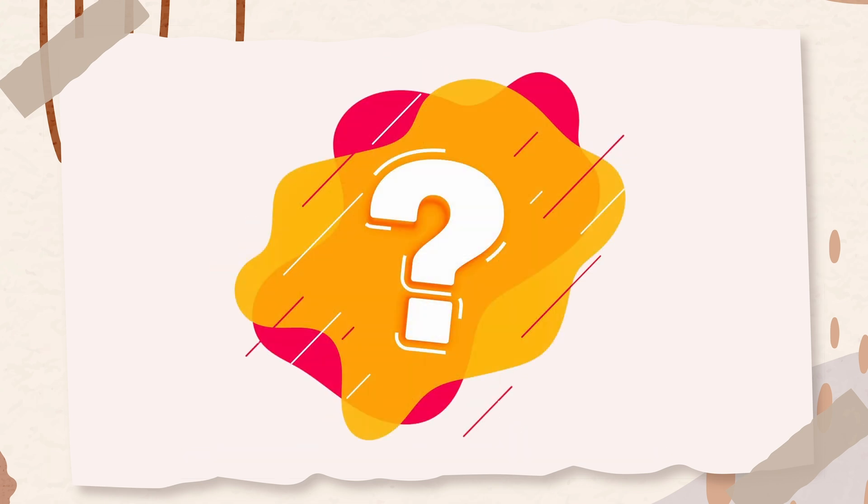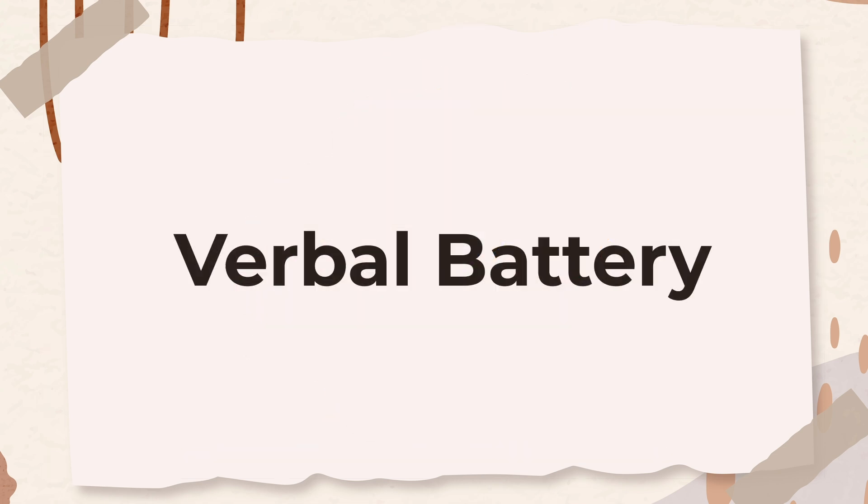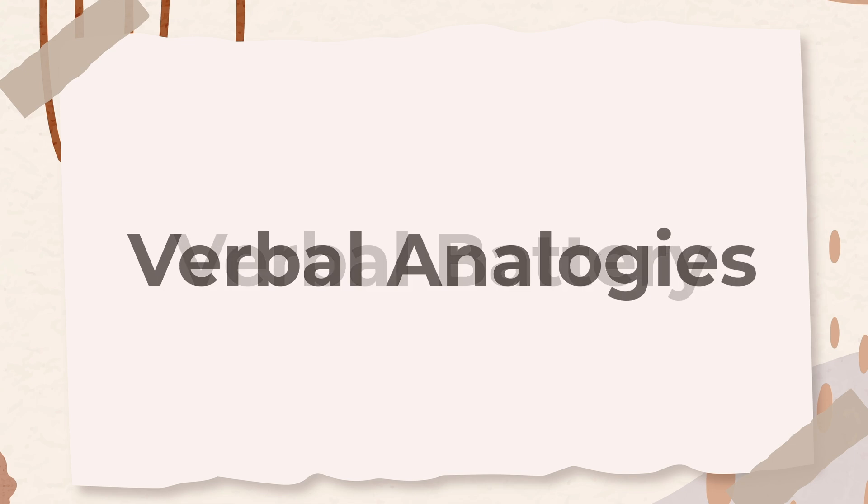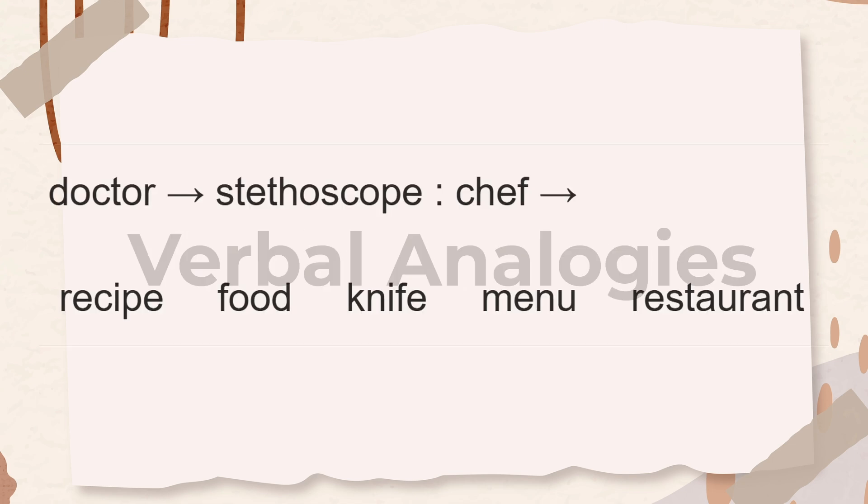Now, let's move on to the last battery of the third grade CogAT test, the verbal battery. The first subtest in this battery is called verbal analogies. This question shows a pair of words that go together in a certain way, and a third word. Choose a word from the answer choices that goes together with the third word in the same way.